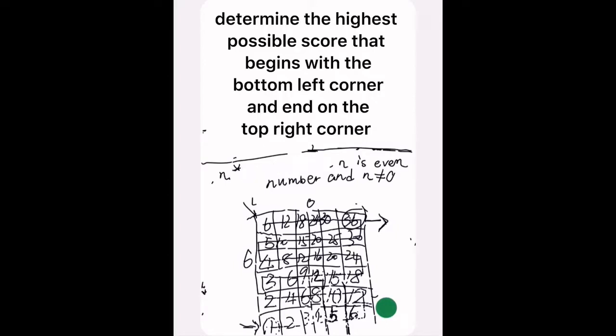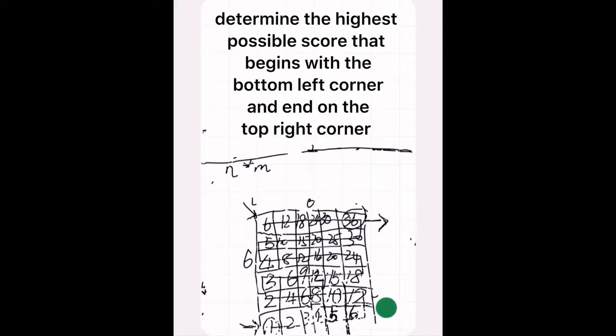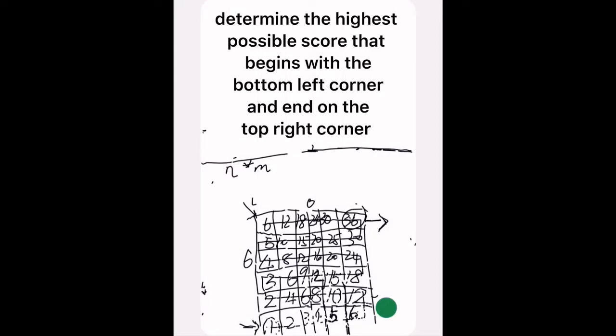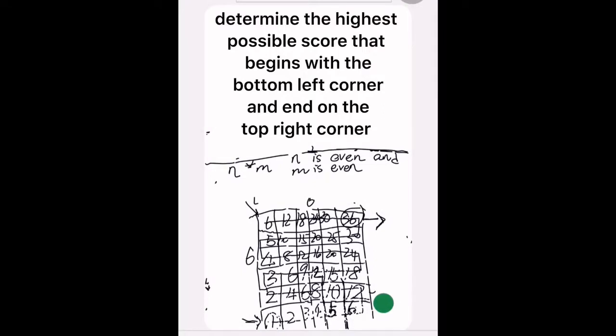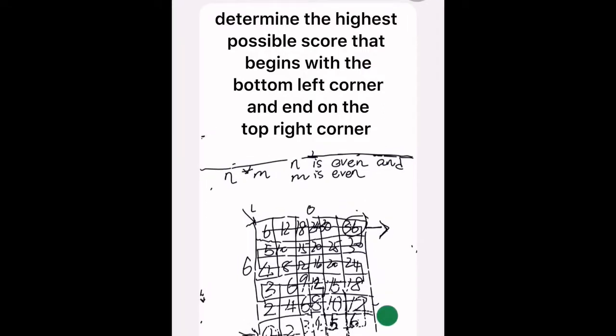So, the statement is when there is an n times n square, and when n is equal to an even number and n is not 0, you cannot find a path that walks through all grids. It is the same for rectangles. When n times m, if n is even and m is even, it is impossible to find a path to walk through all boxes in the grid. But it is possible when n or m, I mean one of them is even and one of them is odd. This is possible to walk through.